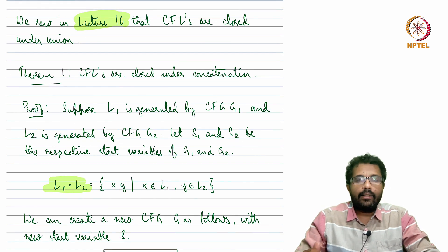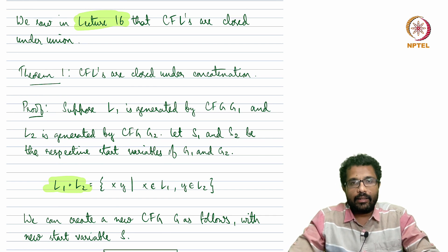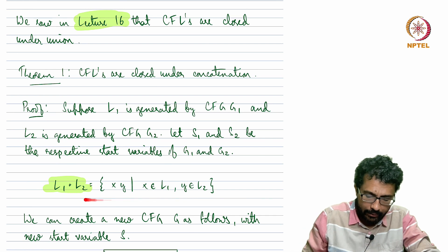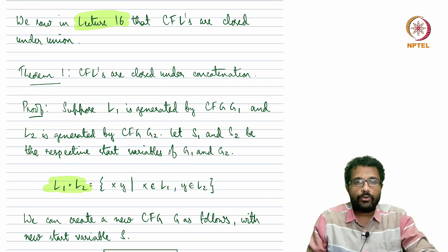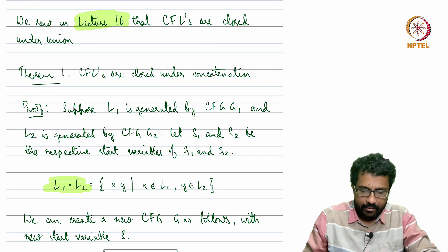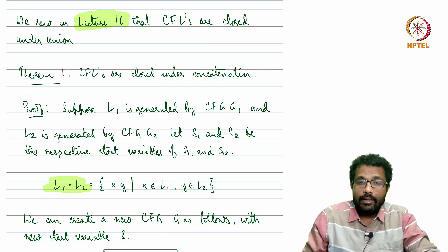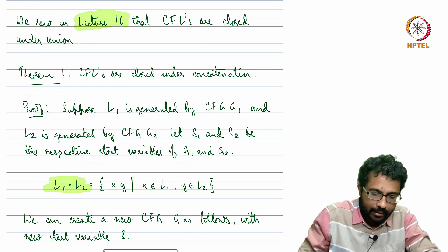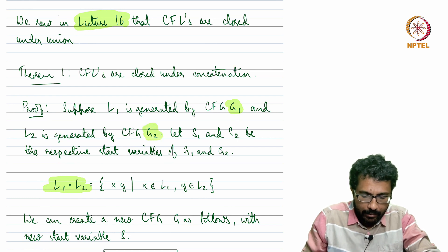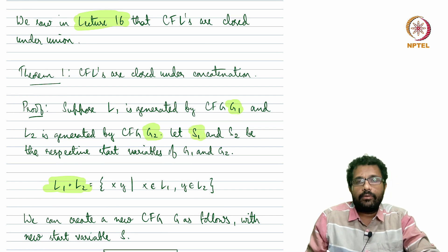We want to show that if L1 and L2 are context-free languages, then their concatenation is also context-free. This turns out to be somewhat straightforward. If L1 and L2 are context-free languages, we may assume that L1 is generated by some context-free grammar G1 and L2 is generated by some other context-free grammar G2, with start variables S1 and S2 respectively.